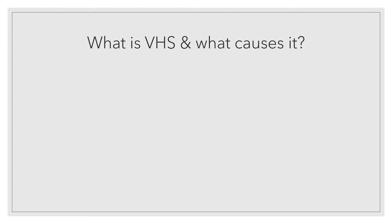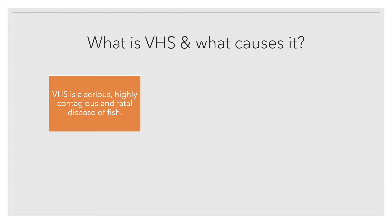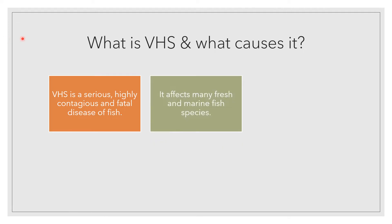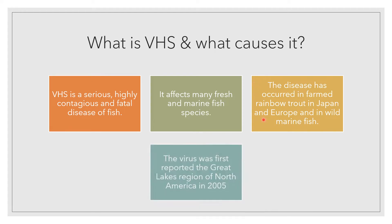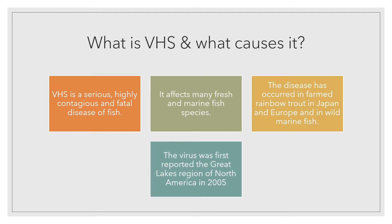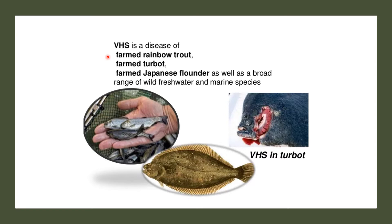VHS is a serious, highly contagious, fatal disease of fish. It affects many fresh and marine species. The disease has occurred in farmed rainbow trout in Japan and Europe and in wild marine fish. The virus was first reported in the Great Lakes region of North America in 2005. VHS is a disease of farmed rainbow trout, farmed turbot, and farmed Japanese flounder, as well as a broad range of wild freshwater and marine species.